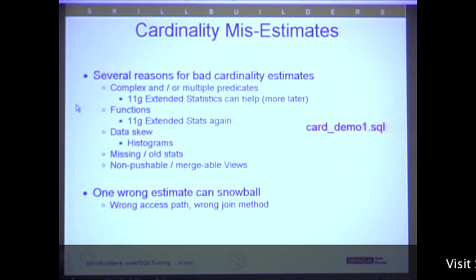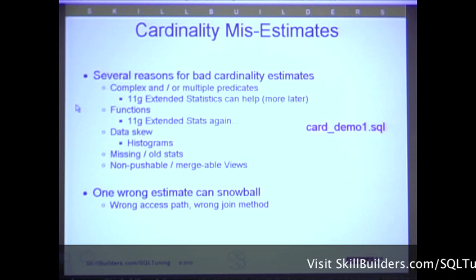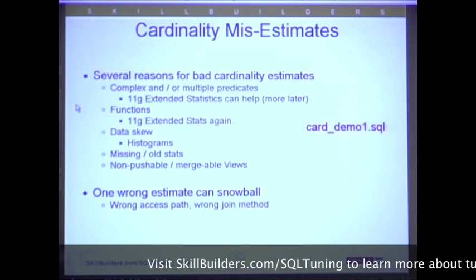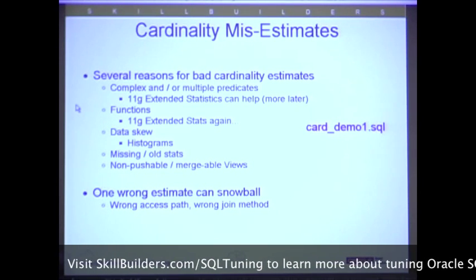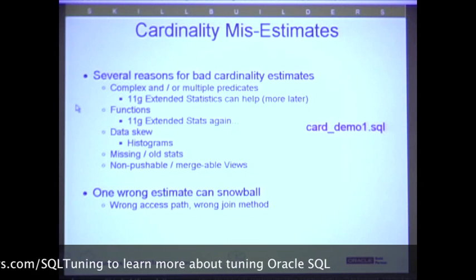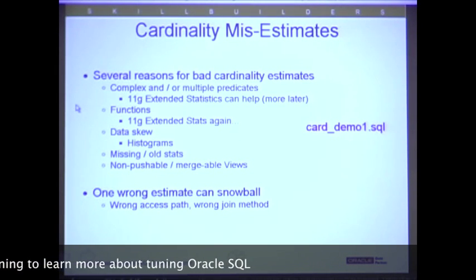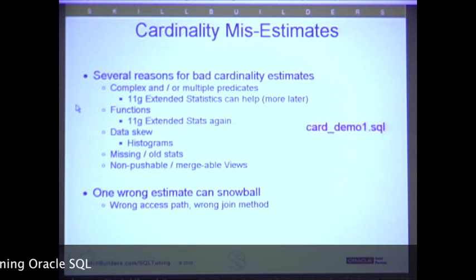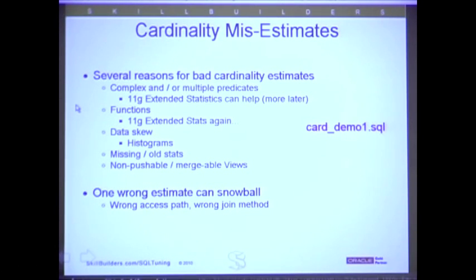For cardinality feedback, let's be clear about why cardinality estimates can be wrong. Complex or multiple predicates are hard for the optimizer to produce correct cardinality for. Extended statistics, which we'll look at as part of DMS stats, can help with this — but you have to plan for that. You have to run special procedures when two columns are used together in a WHERE clause and tell the optimizer through DMS stats that they're related. Functions are also a problem — we often use LOWER, UPPER for character searches, or TRUNC on a date column. All of these functions totally mess up cardinality estimates.